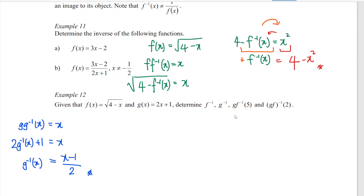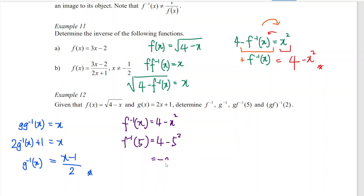Now we evaluate g composed with f⁻¹ at x equal to 5. We determined that f⁻¹(x) equals 4 minus x squared, so with x equal to 5, we have 4 minus 5 squared. 5 squared is 25, and 4 minus 25 is negative 21. Then we substitute into function g: g(negative 21) equals 2 times negative 21 plus 1. 2 times negative 21 is negative 42, plus 1 gives negative 41.